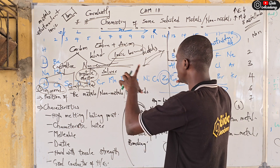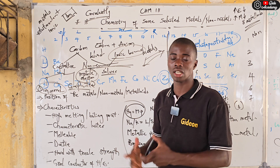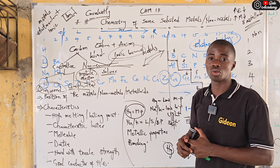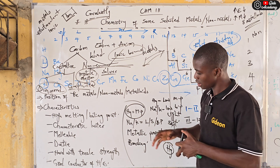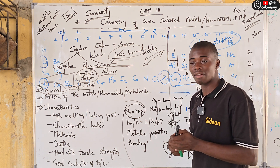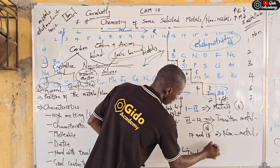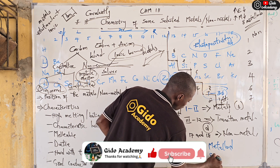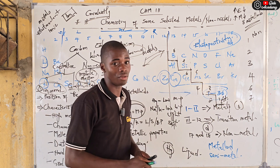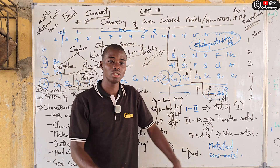If you have any questions based on everything explained, please drop them in the comment section and I'll attend to them. Please share this video with others studying chemistry of selected metals and non-metals. I also have an assignment for you: how many metalloids — also called semi-metals — do we have in the periodic table? And list five of them. Thanks for watching — see you next time.